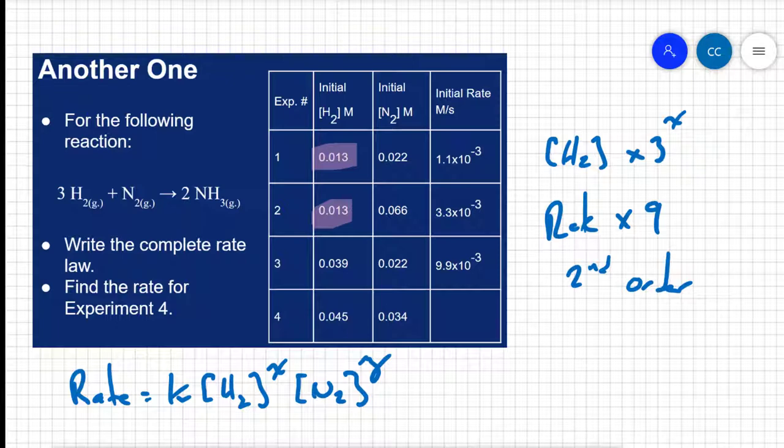Well, my nitrogen is going up by a factor of 3, 0.022 to 0.066. And my rate is also increasing by a factor of 3, 1.1 to 3.3.